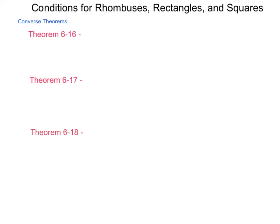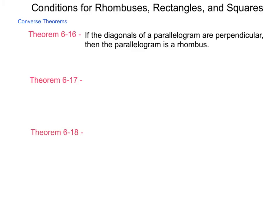We're going to begin with three theorems. The first is Theorem 6-16, which tells us if the diagonals of a parallelogram are perpendicular, then the parallelogram is a rhombus. This is basically the converse of a theorem we had in our last lesson.